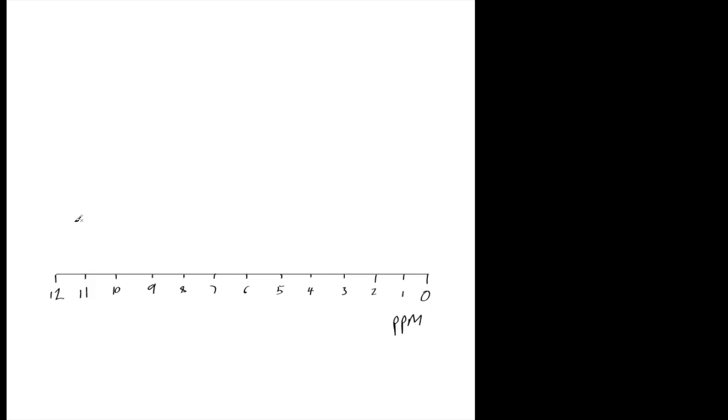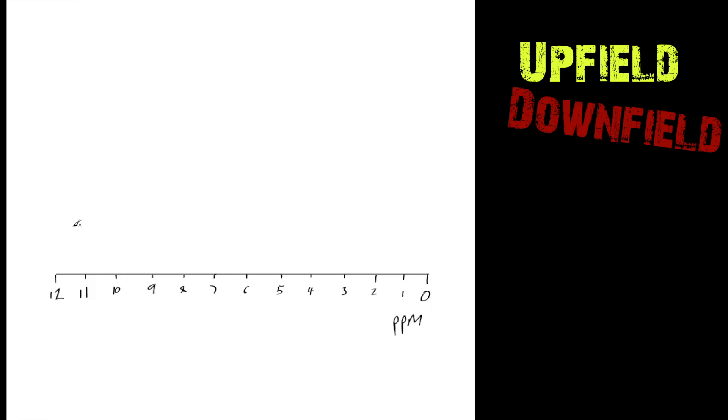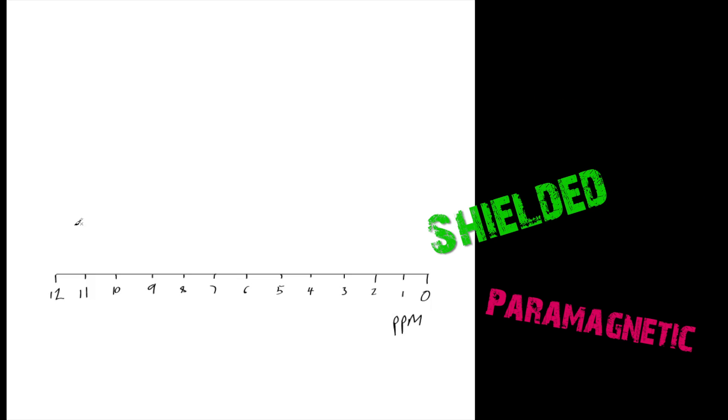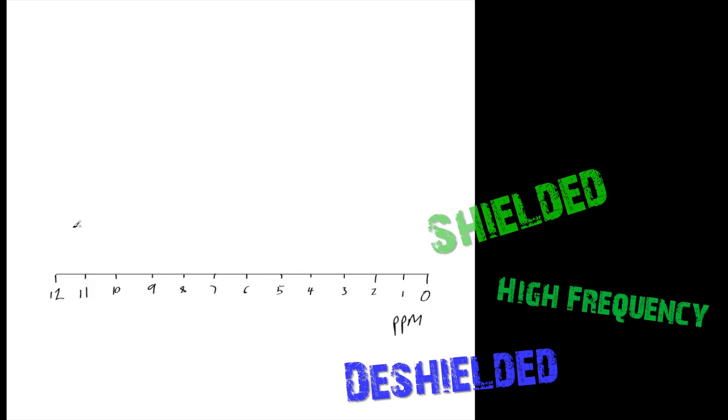Now one of the most confusing things in NMR are the terms upfield, downfield, diamagnetic, paramagnetic, shielded, deshielded, high frequency, low frequency.